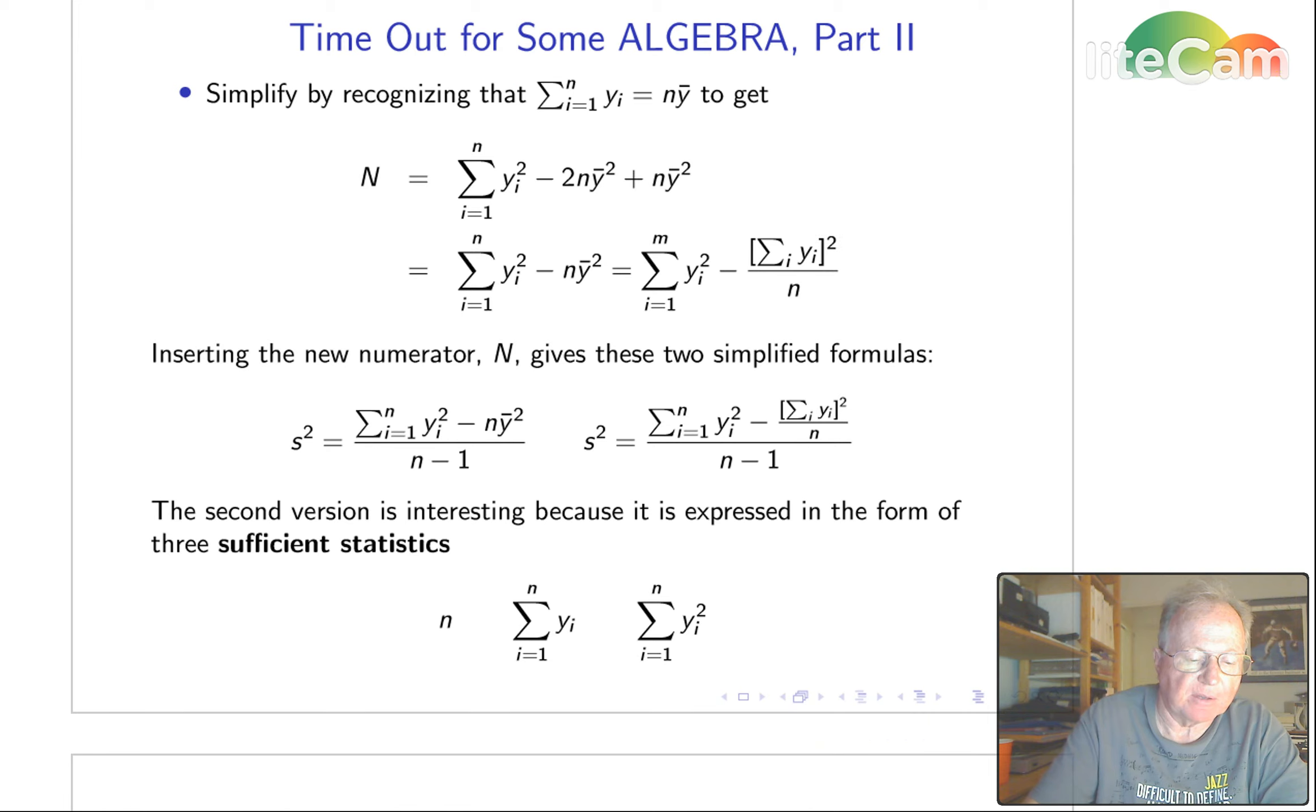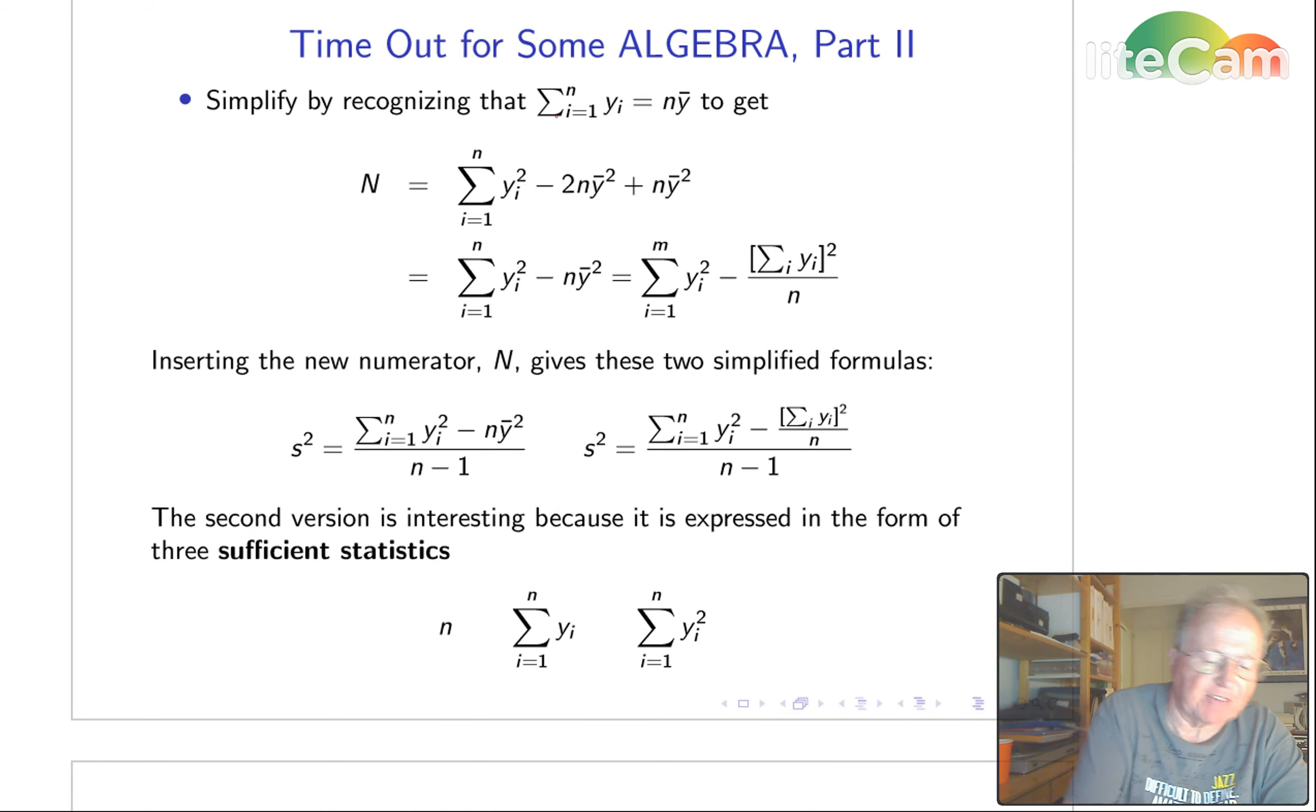Now, if we take advantage of the fact that the sum of all the observations is just n times the mean, we can clean up that numerator and get it into this form. And that could be written in a couple of different ways. One is the sum of squares minus n times the mean squared. And the other is the sum of squares minus the square of the sum divided by n.